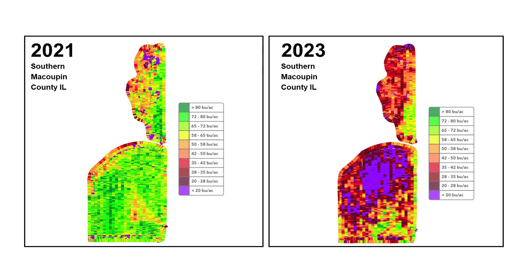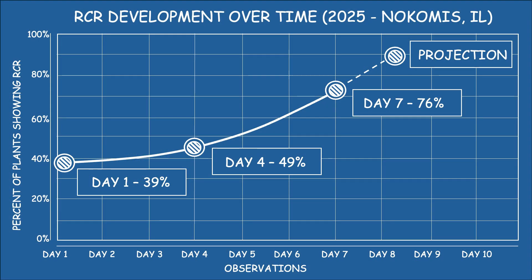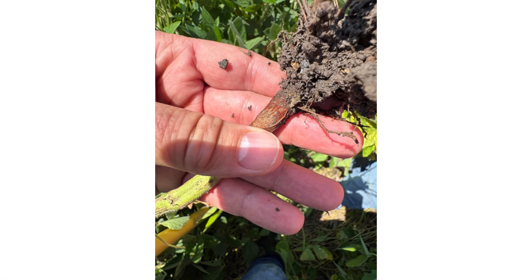We're talking about 40 to 60 percent yield hits when this really gets going in a field. Another way that red crown rot differentiates itself from sudden death syndrome is to look at the lower root material — that's a big way to distinguish this disease.